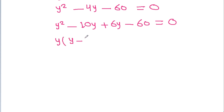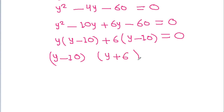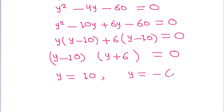Taking y common gives y(y - 10), and taking 6 common gives 6(y - 10) = 0. So we get y = 10 and y = -6.